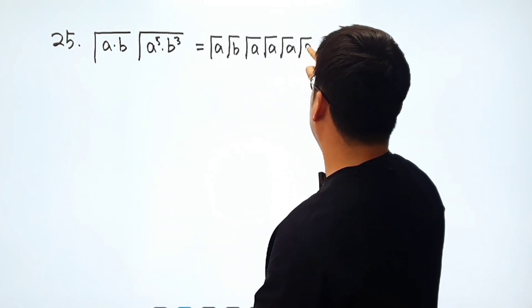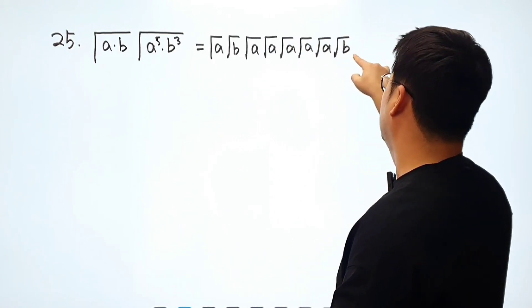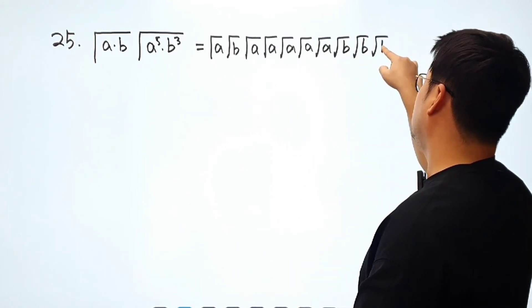Okay. So rad A and rad A, and I'm going to write rad B, rad B, and rad B just like this.